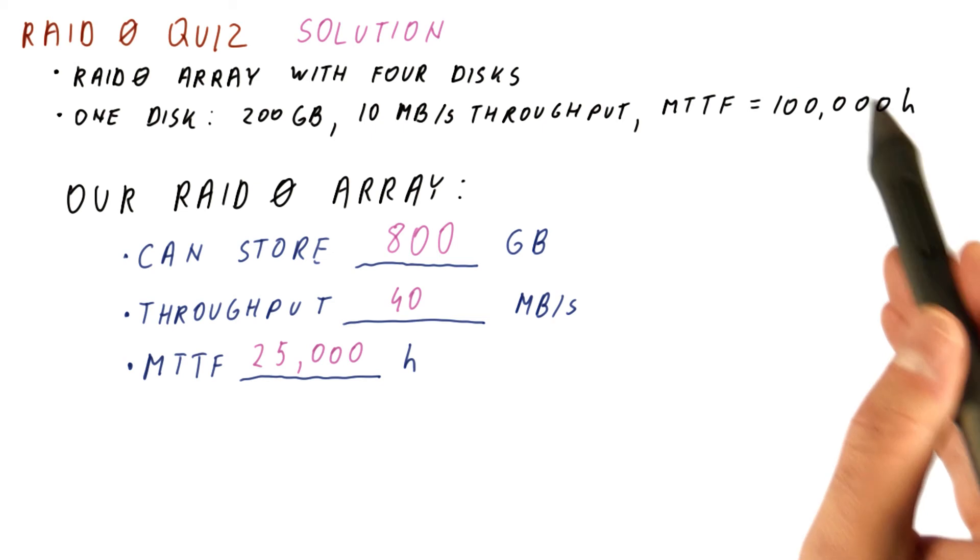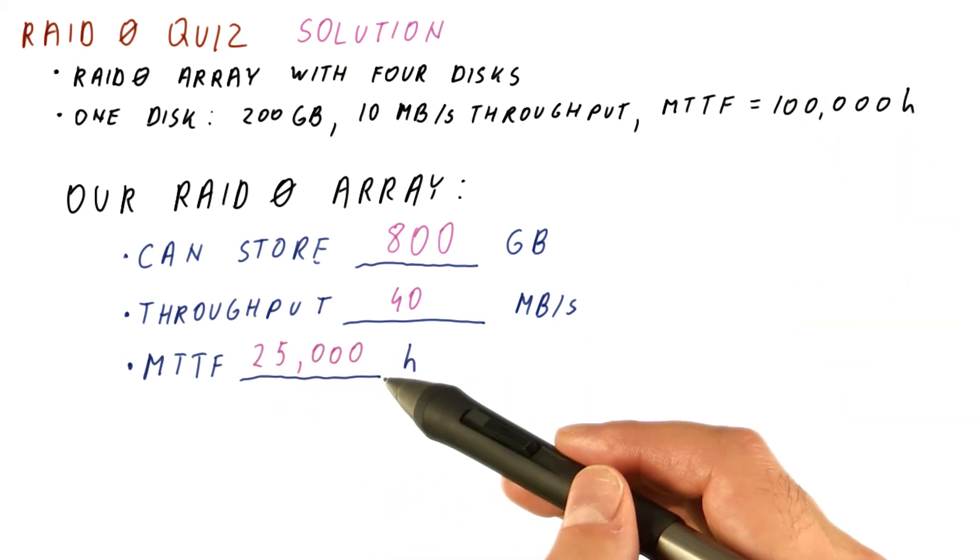So obviously, with such a low MTTF, we should not have used four disks in RAID 0 like this.